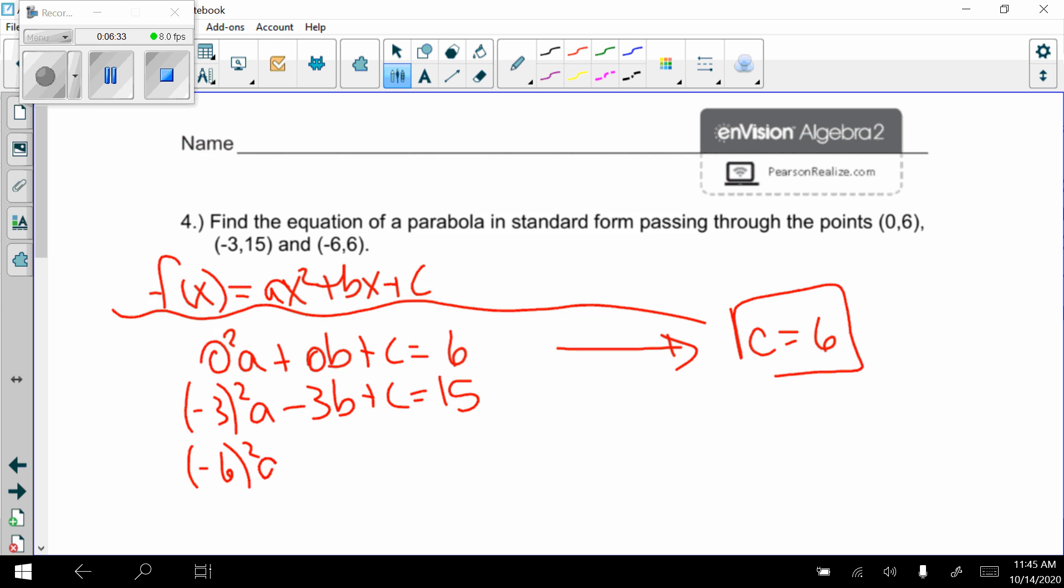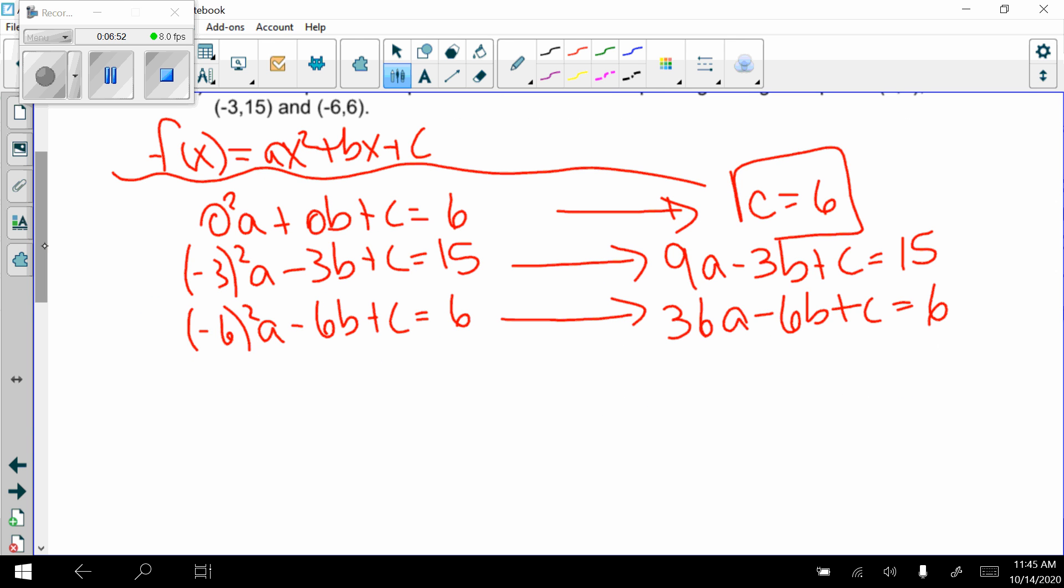Negative 3, 15. Negative 3 squared a minus 3b plus c equals 15. And finally, negative 6, 6. Negative 6 squared a minus 6b plus c equals 6.